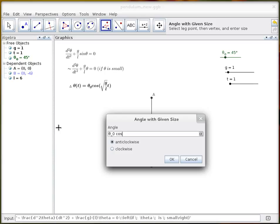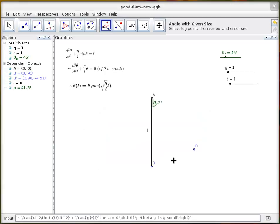Cos brackets square root which is written like that brackets g over l times t, press OK.